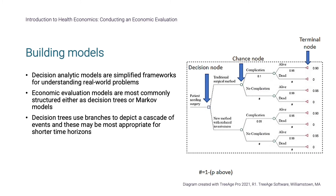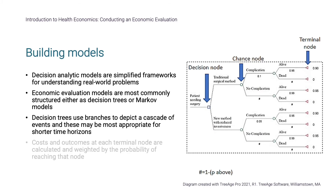In our simple example, the probability of a patient undergoing a complication and surviving (the topmost branch) is the product of the probability of having a complication (0.1) and the probability of surviving the complication (0.95), yielding 0.095 or 9.5%. The probability of having a complication and dying would be 0.1 times 0.05, or 0.005 (0.5%), and so on for each terminal node. The number at the terminal node represents the health utility, applied to the relevant time horizon, and each terminal node is also associated with a cost. Costs and outcomes are calculated across all terminal nodes and compared, commonly reported as an ICER.